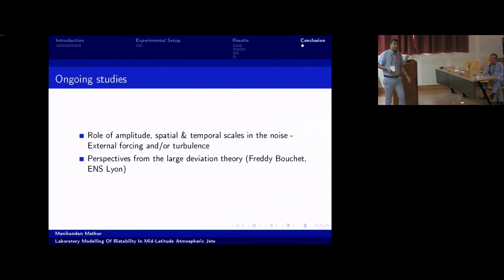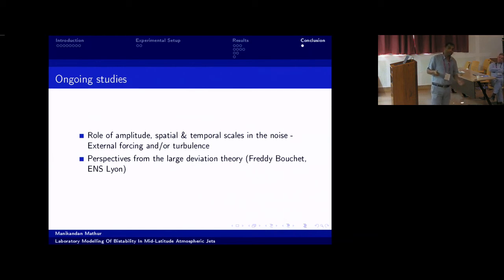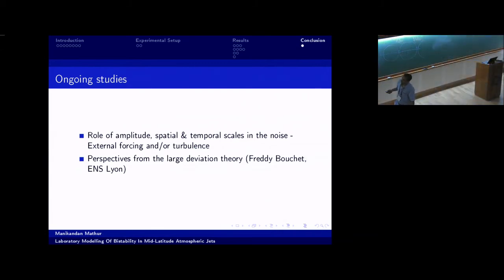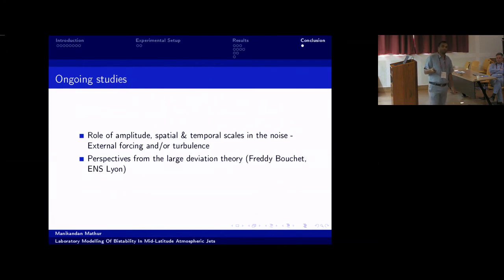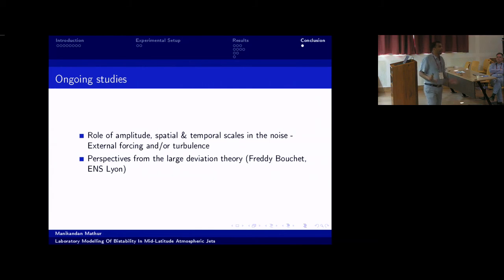Current efforts are towards a detailed understanding of the role of amplitude, spatial, and temporal scales of noise — either in the external forcing such as the rotating lid, or noise inherently present in the turbulent flow. We have tried many things to trigger transitions, including introducing cylindrical topography to simulate vortex shedding downstream of a cylinder to see if turbulence in the wake could induce transitions — not so successful. We are also in discussions with Freddie and Joel on how to put these results in the context of large deviation theory. Thank you very much.